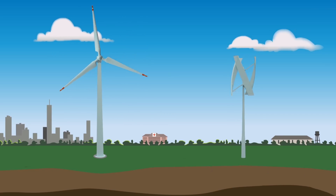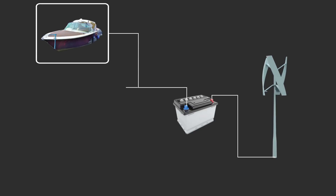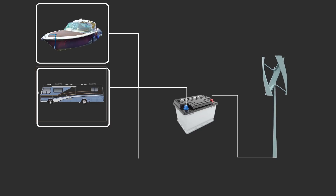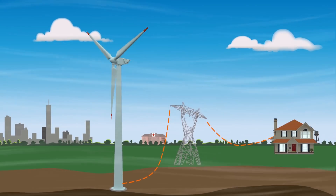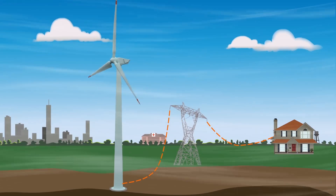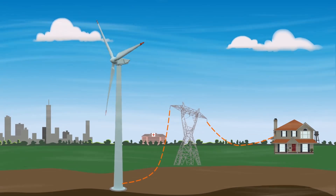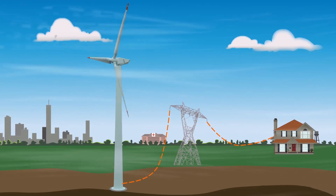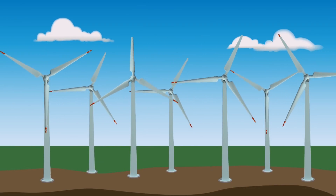The smallest turbines are used for applications such as battery charging for auxiliary power for boats or caravans, or to power traffic warning signs. Slightly larger turbines can be used for making contributions to a domestic power supply, while selling unused power back to the utility supplier via the electrical grid. Arrays of large turbines known as wind farms are becoming an increasingly important source of intermittent renewable energy.